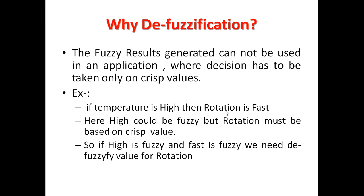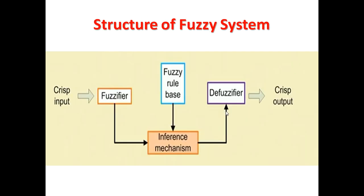This is the structure of a fuzzy system. We have a crisp input directed towards the fuzzifier, which converts it into fuzzy values. These fuzzy values are sent to the inference mechanism, which is responsible for taking decisions in different situations. The inference mechanism takes help from the fuzzy rule base, which is a database of different rules depending on fuzzy values. The inference mechanism then sends its decision to the defuzzifier, which converts that fuzzy decision into a crisp value, giving us the crisp output.